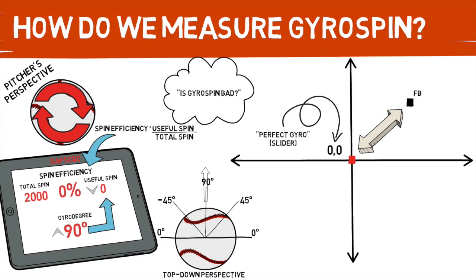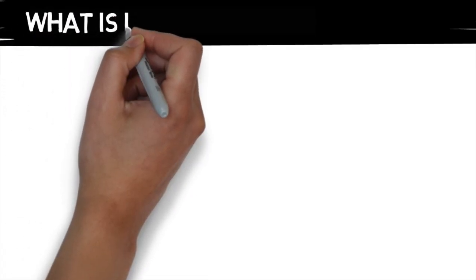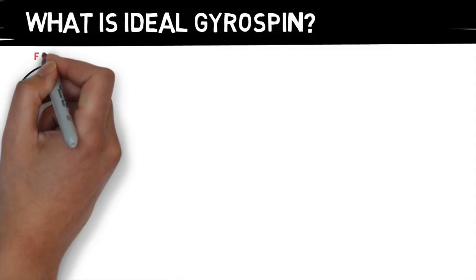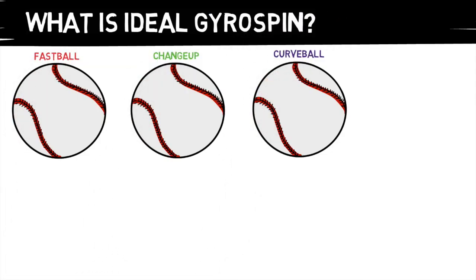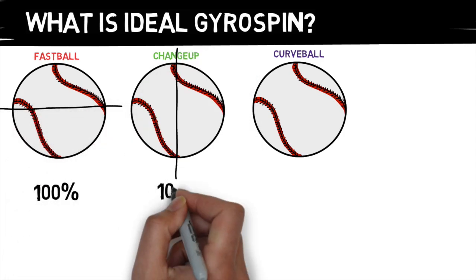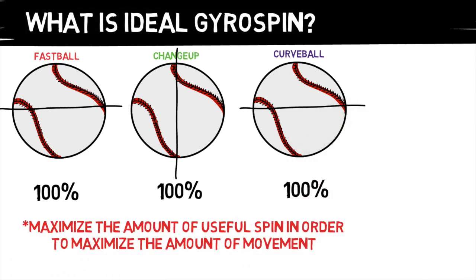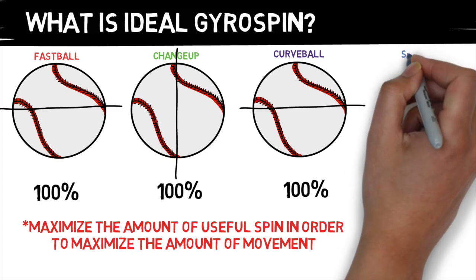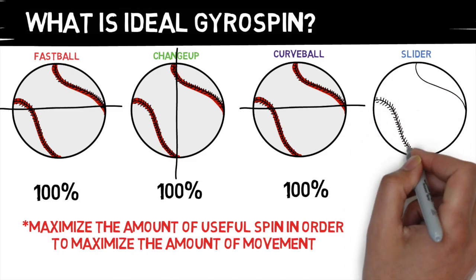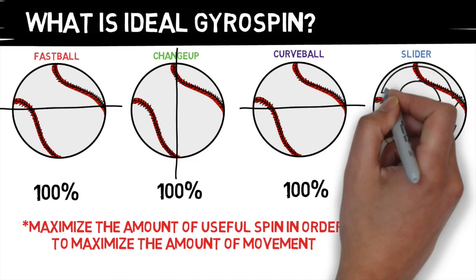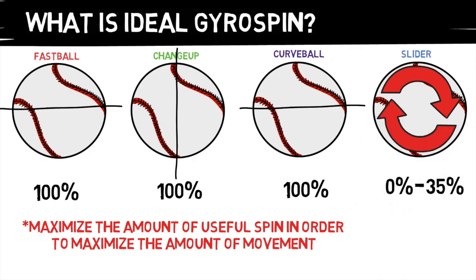Lastly, let's briefly cover what ideal gyro spin is going to be on each pitch — we will break this down more in depth in a pitch-by-pitch video later. Your fastball, changeup, and curveball are for the most part going to have higher spin efficiencies, because you want to maximize the usage of the spin you are putting on the ball. If you have a pitch with 2,500 RPMs but a spin efficiency of 75%, that's really going to equate to about a 1,900 spin rate, which has a direct correlation on the amount of movement that pitch will have. And then there's the slider — the king of gyro spin. I've seen great sliders anywhere from 0 to 35% spin efficiency, but this pitch is a little more difficult to nail down to a general range, so I'll cover that in a later video.